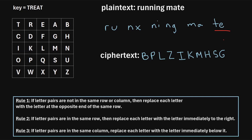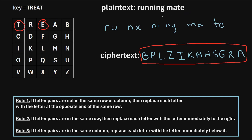For our last letter pair, T, E — we find T and E and can see they're in the same row, so we use rule two. T is replaced with the letter to its right, which is R. And E is replaced with the letter to its right, which is A. That's the last letter in our ciphertext. That is how you encrypt the plaintext 'running mate' into ciphertext using the Playfair cipher.